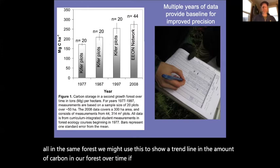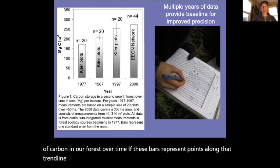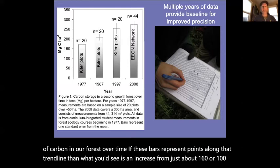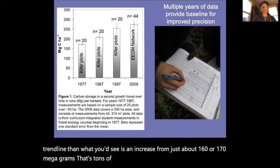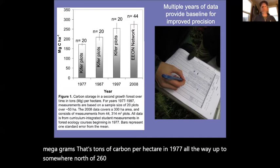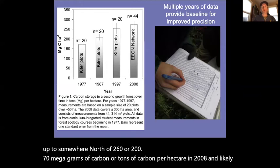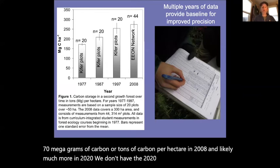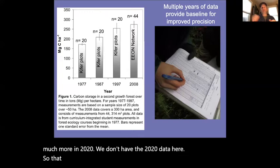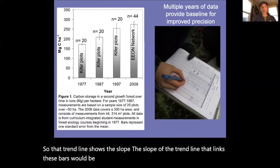The data shows an increase from about 160 to 170 megagrams — that's tons of carbon per hectare — in 1977, up to somewhere north of 260 to 270 megagrams of carbon per hectare in 2008, and likely much more in 2020. The slope of the trend line linking these data points represents our net rate of carbon increase in these plots over time.